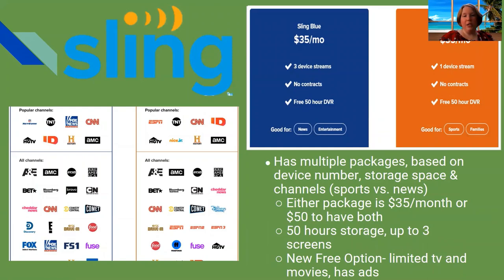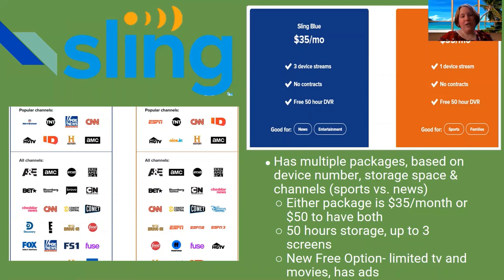Sling TV is a lower-cost option with two packages at the same price. One focuses on news and entertainment with one streaming device; the other focuses on sports and family with three streaming devices. You can get both packages together for $50 with more channels. There's also a free option with limited content and ads. Unlike other live TV services, Sling TV does not require a home network, making it better for travel — but local network channels can be unreliable and it has no 4K capabilities.